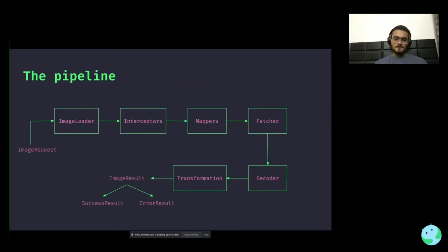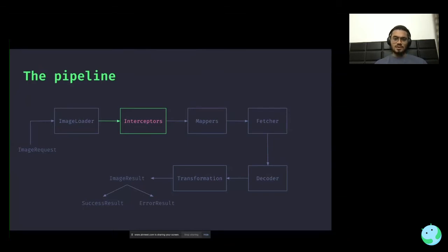Now let's talk about the actual pipeline. This is the entire pipeline and as you can see there are various stages. The very first thing is that you, as a library user, create the image request and pass it to the image loader. It then hands stuff to interceptors — a similar concept to OkHttp interceptors — giving you a chance to intercept the image request before the pipeline actually takes it in. Then it hands over stuff to mappers in case you provided custom mappers.